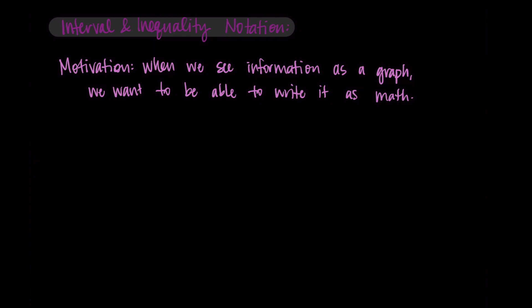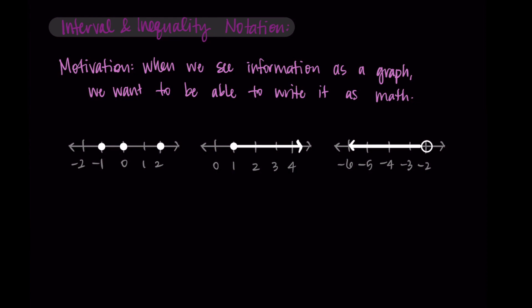So let me show you what this might look like. Let's say we have these three number lines here — these are our graphical representations. The first example might be something like individual points at negative one, zero, and two. The second example could be something like the point one and everything greater than it, represented by a solid or filled-in circle, meaning we include the point one, and then a line and an arrow at the end to indicate we're including everything above it.